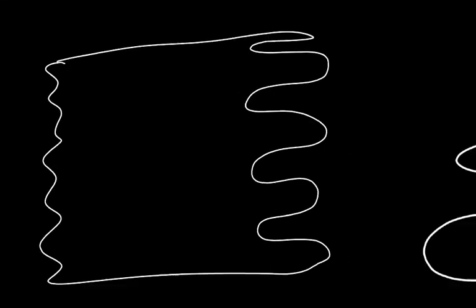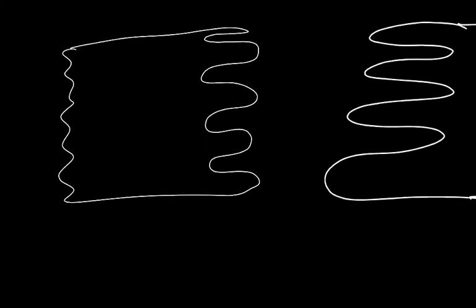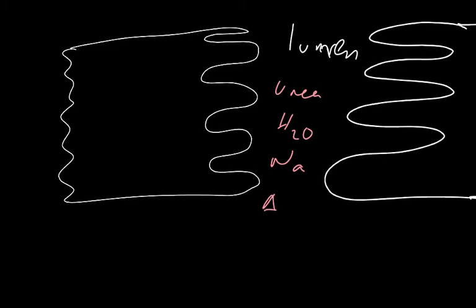This happens in the cells of the proximal convoluted tubule. We have what's called the lumen, which is the hole that the filtrate goes down. The filtrate is going to have loads of water, urea, sodium, chloride, potassium, phosphates, amino acids, and principally loads of glucose, because glucose is circulating in your plasma.